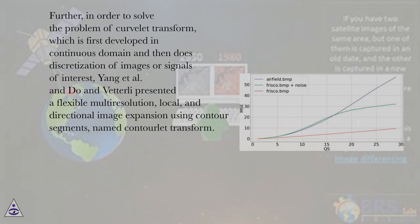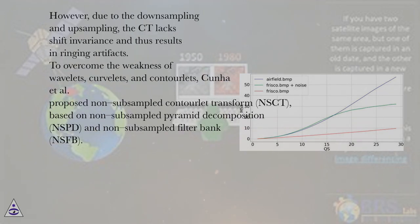However, due to the downsampling and upsampling, the CT lacks shift invariance and thus results in ringing artifacts. To overcome the weakness of wavelets, curvelets, and contourlets...